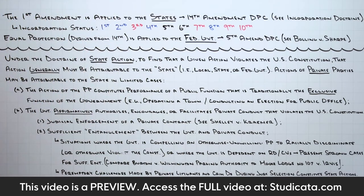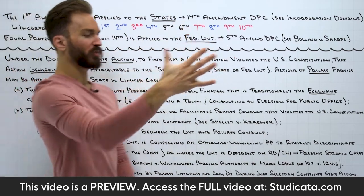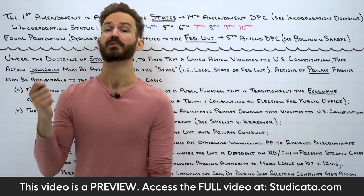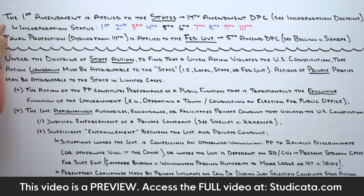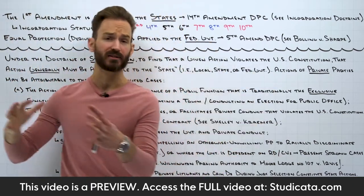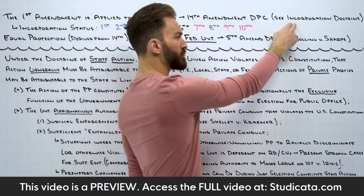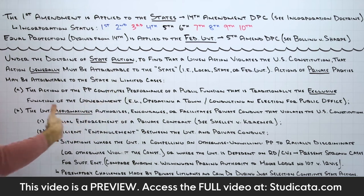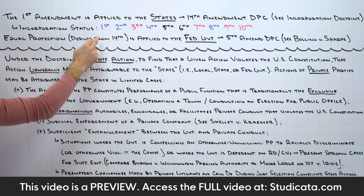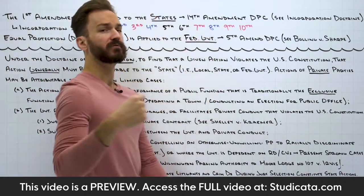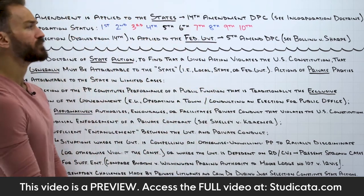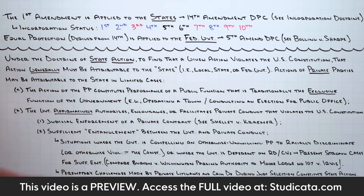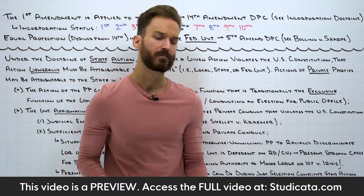When the Bill of Rights was first ratified in the late 1700s, the first ten amendments of the U.S. Constitution only applied to the federal government — they did not apply to the states. But today, through the incorporation doctrine and basically 200 years of case law, the Supreme Court has incorporated all of the most important protections. The entirety of the First, Second, Fourth, and Eighth Amendment has been fully incorporated into the Fourteenth Amendment Due Process Clause, and portions of the Fifth and Sixth Amendment have also been incorporated. This is very important because the Fourteenth Amendment applies to the states.